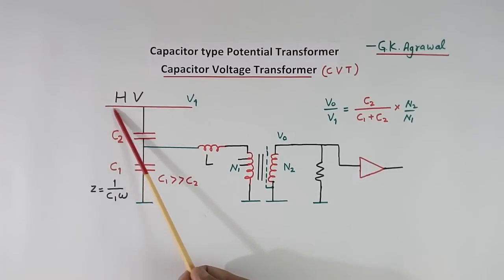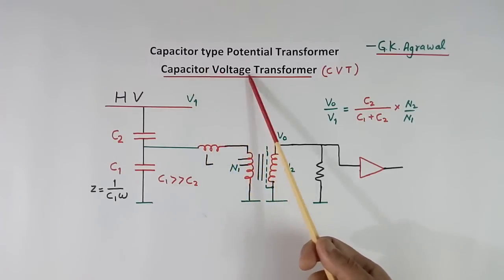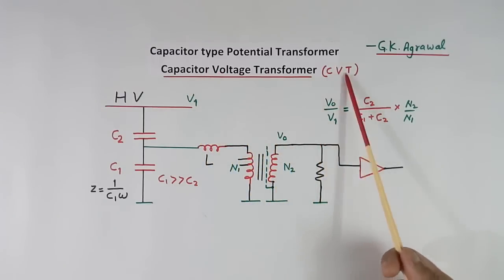When we have to measure the voltage on a very high voltage line, we will require a transformer with high voltage insulation. So the transformer becomes expensive. To solve that problem, we use capacitor voltage transformer, CVT.